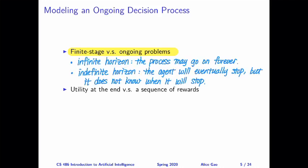Because of the difference between a finite stage problem and an ongoing problem, we will have to think about our utility function differently. In a decision network, we can make multiple decisions in sequence and then calculate our utility at the end, but in an ongoing problem, it does not make sense to consider the utility at the end. There might not be an end for an infinite horizon problem, or we don't know when we will reach the end for an indefinite horizon problem. So instead, we will consider a sequence of rewards, one for each time step.